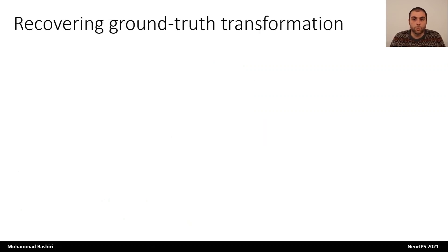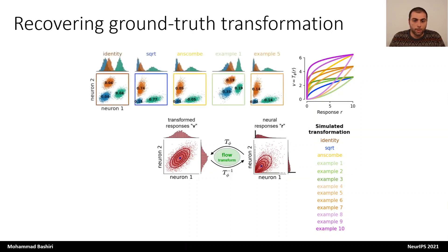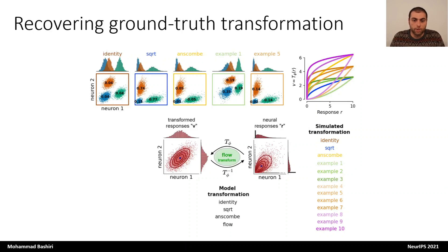To test the model, the first thing we did was to see if it can recover ground truth transformations. We sampled transformed responses for 100 neurons from a Gaussian distribution with known parameters, and then transformed them into simulated neural responses with a variety of transformations. Here you can see some examples of the response distributions generated using these transformations. Once we generated the simulated responses, we fitted models on the simulated data with different transformations — specifically, models with identity, square root, Anscombe, and flow transformation. The first three are fixed and the flow is learnable.